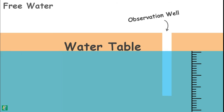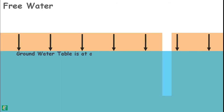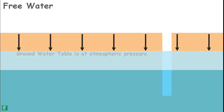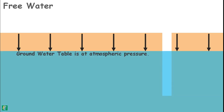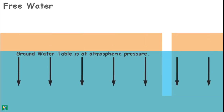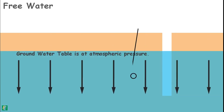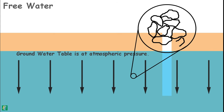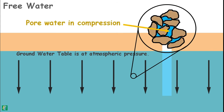The water present at the water table experiences atmospheric pressure, and below this level, pressure on the water increases with depth. All the water present in the voids below the water table is in compression.